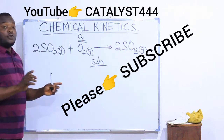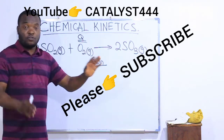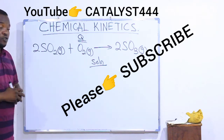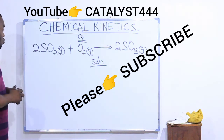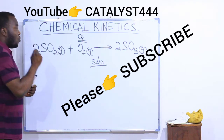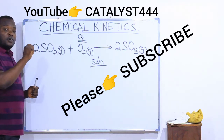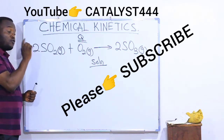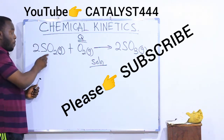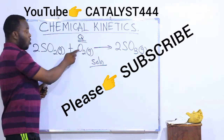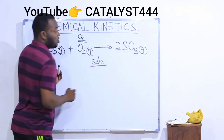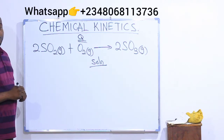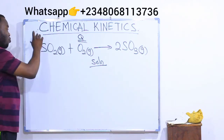The first thing you need to do is to ensure that your equation is balanced. As you can see, our equation is well balanced so we can proceed. We are going to write expressions for the rate of this reaction with respect to each of the species present — we have SO2, O2, and SO3 — and we are going to write the rate of reaction using each of them.